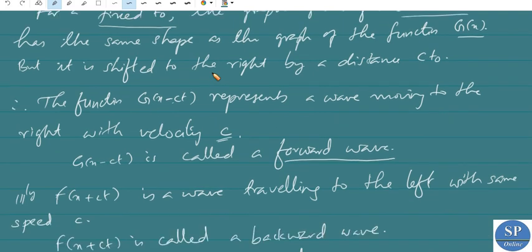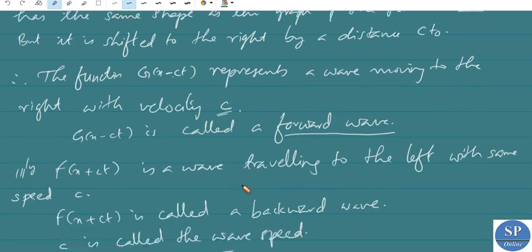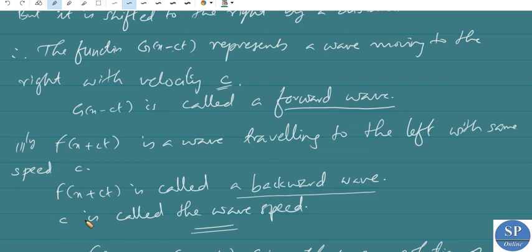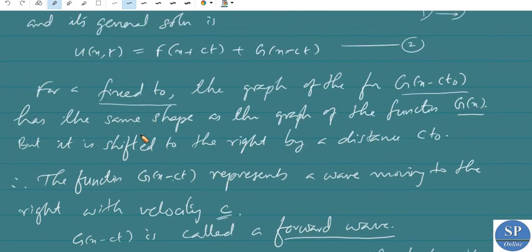So f(x+ct) is a wave traveling to the left with the same speed c. Therefore f(x+ct) is called a backward wave. Here c is the wave speed.